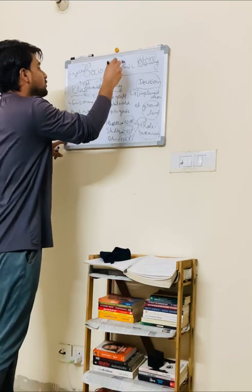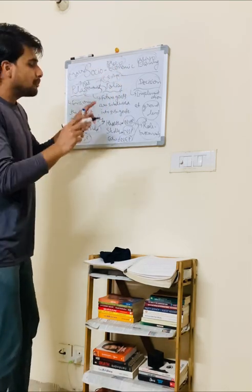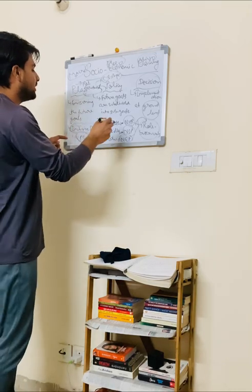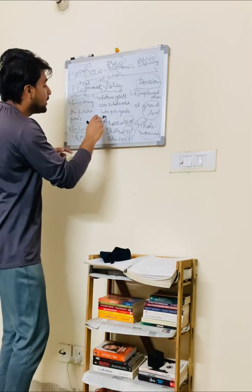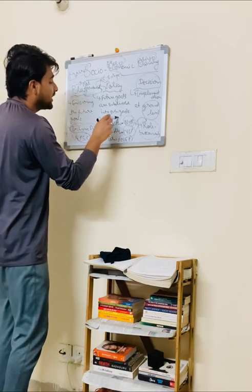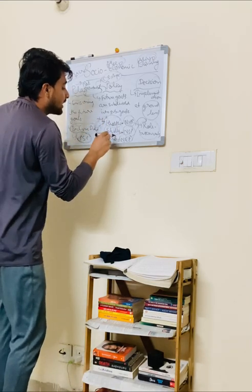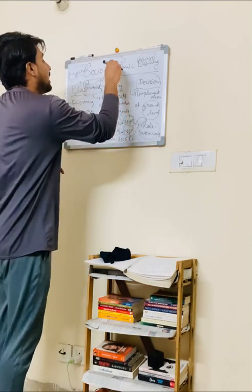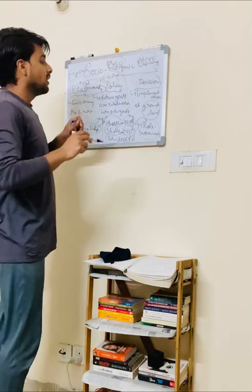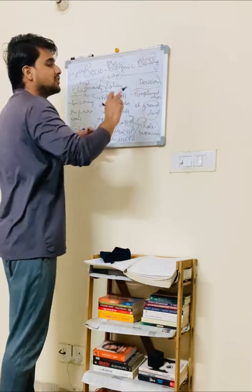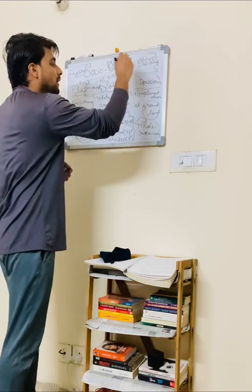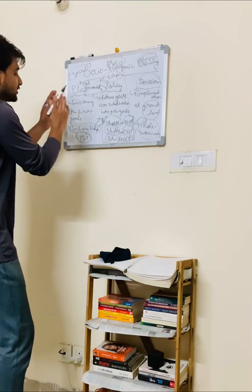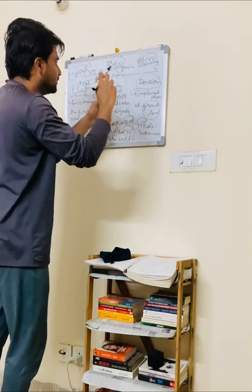When we talk about the Meso level, there is a particular sector — like the automobile sector. At the Meso level, we have to achieve inclusive development by focusing on three sectors: health, skills, and education. And then at the Micro level, implementation happens at the individual unit level. These are the basic distinctions between plan, policy, and decision.